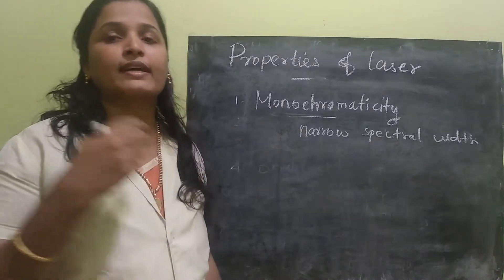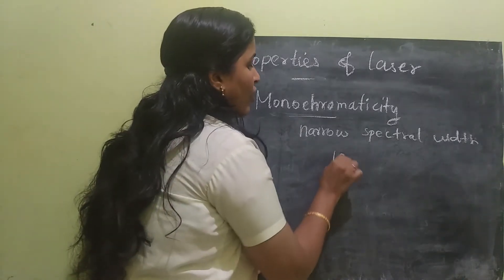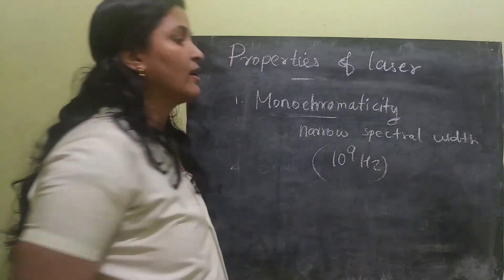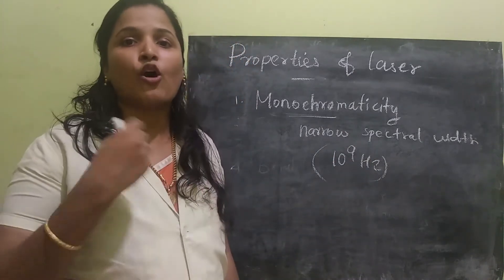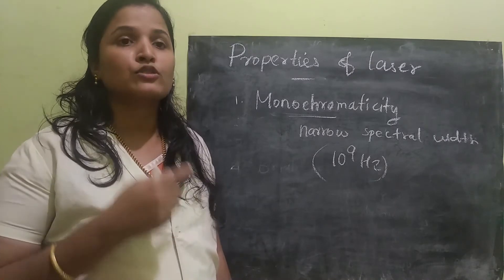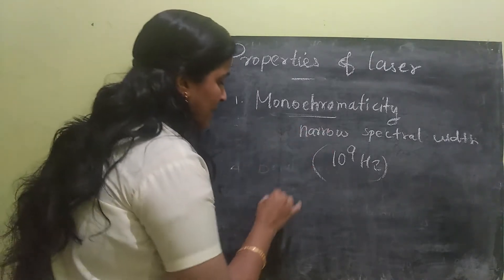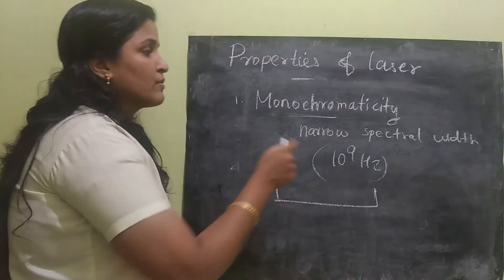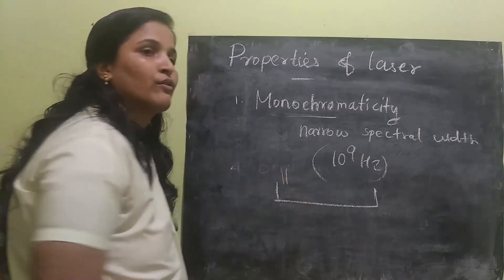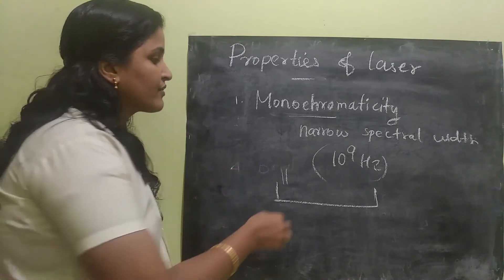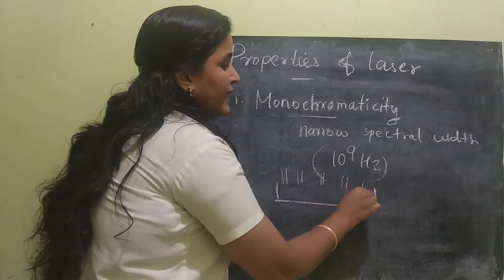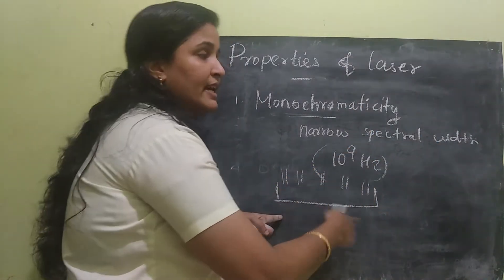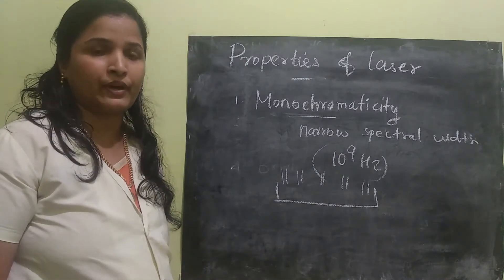The spectral width will be very, very small when compared to the conventional light source — it will be in the order of 10^9 Hz. Because of this very narrow spectral width, many lasers can operate simultaneously. The laser is having a very narrow spectral width, so many lasers can accommodate, and the total spectral width of all the lasers will be almost equal to the conventional light source.